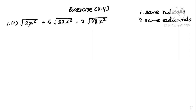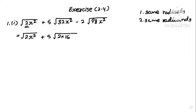Now we have to do that. So we have to do a square root of 2a squared plus 5 and 2, square root of 2a squared, 49a squared.